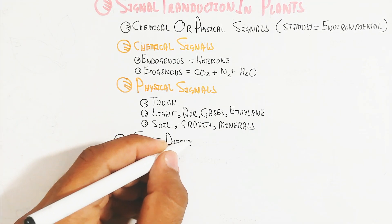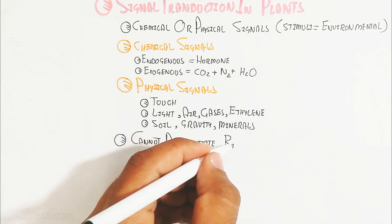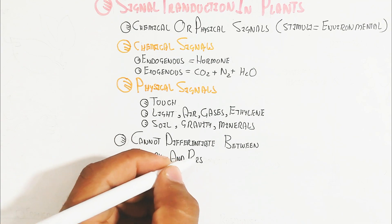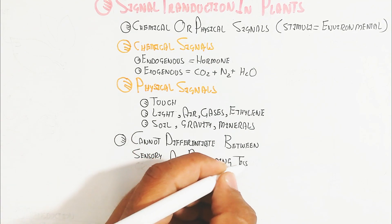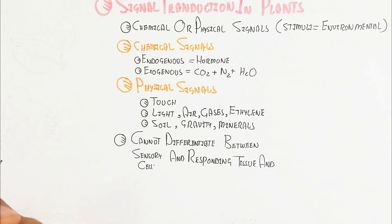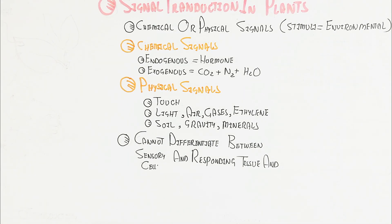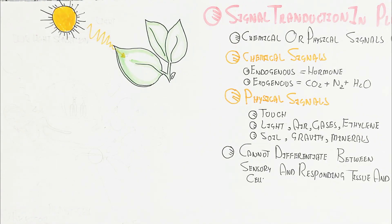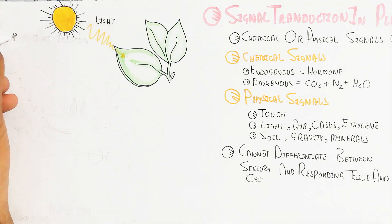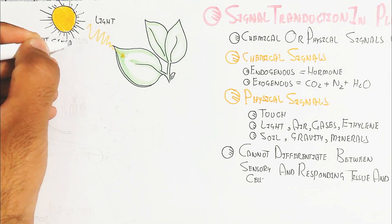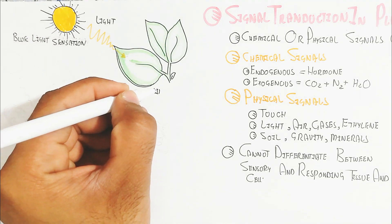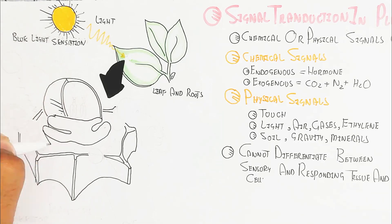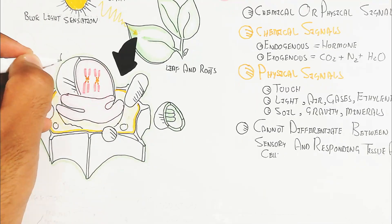Unlike animals, plants cannot differentiate between sensory and responding tissue and cells. We will understand signal transduction through the example of light falling on the leaf and changing its physiology, and also through the example of mineral uptake.